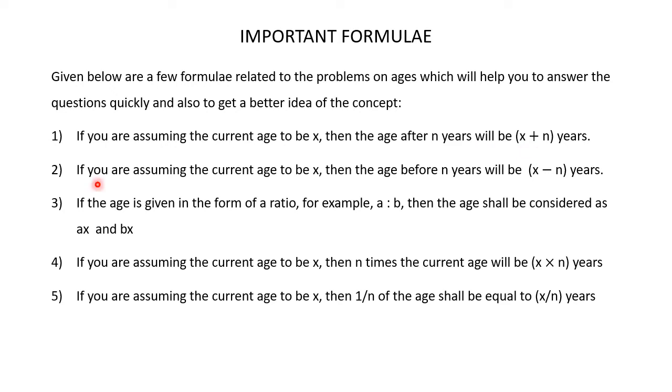If you are assuming the current age to be x, then the age before n years will be x minus n years. Then the age before 5 years will be 15 years, which is nothing but 20 minus 5 years.